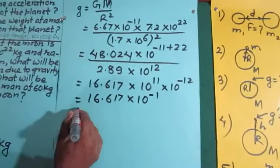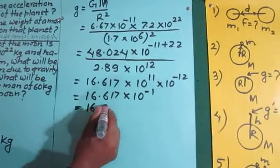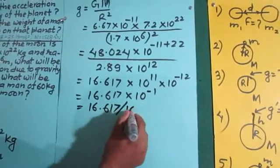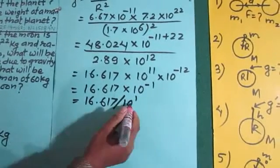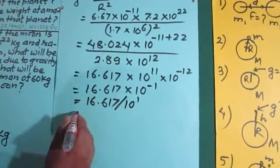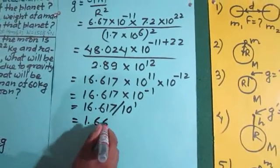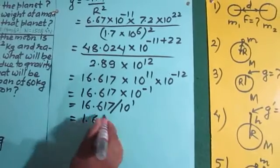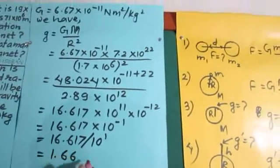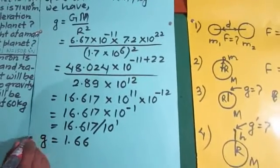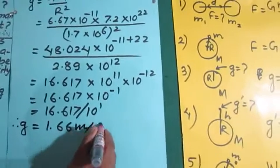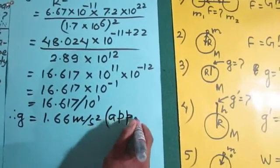Since 10⁻¹ in the denominator means dividing by 10, we get 16.617 ÷ 10 = 1.66. Ignoring further decimal places, the acceleration due to gravity is equal to 1.66 meters per second squared. This is the approximate value of g on the moon.